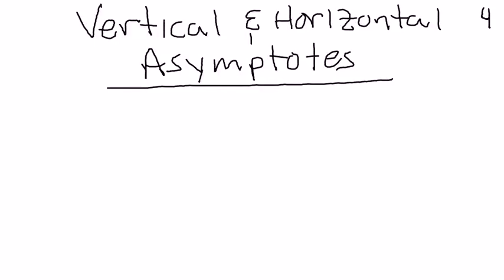Vertical and horizontal asymptotes are an extension of our limits to infinity. These are pretty simple concepts that are similar to what we just looked at.